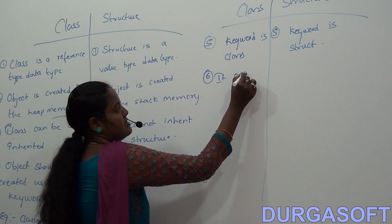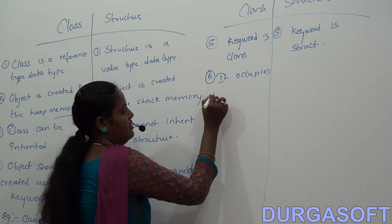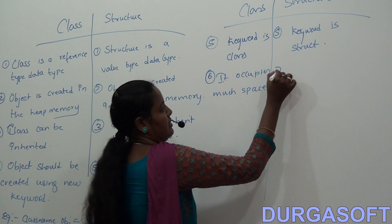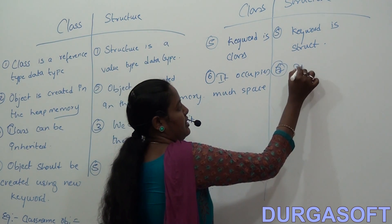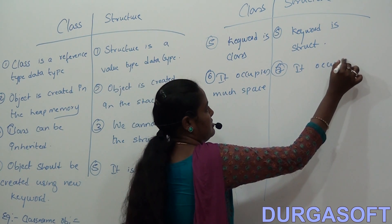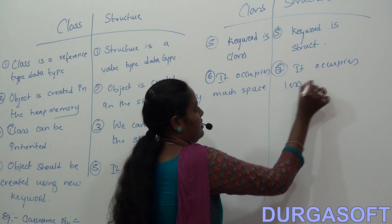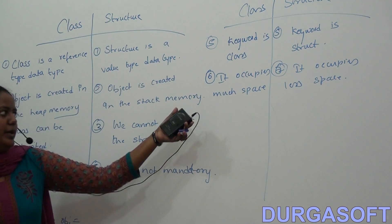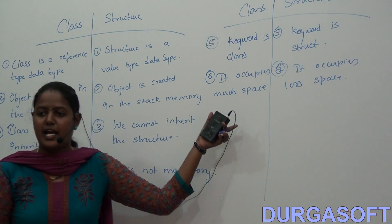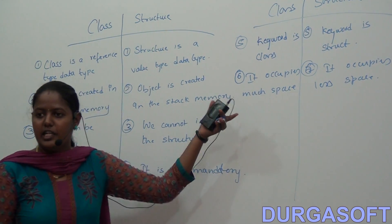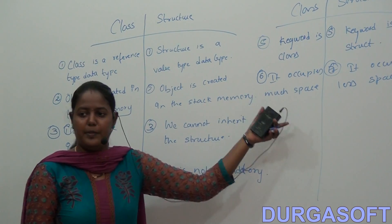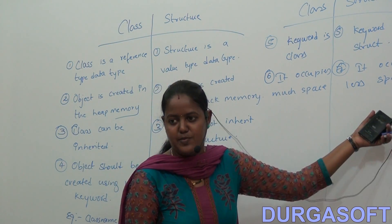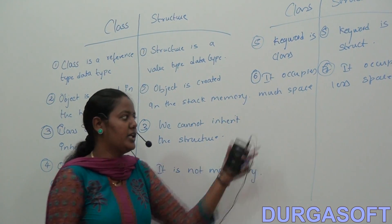Class occupies much space and structure occupies less space. This is due to memory — classes are stored in the heap memory, that is why they occupy much space, whereas structure occupies very less space because it is stored in the stack memory.